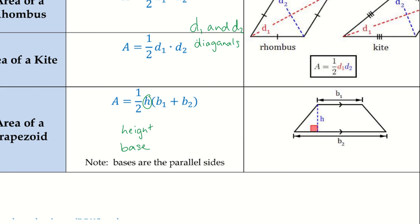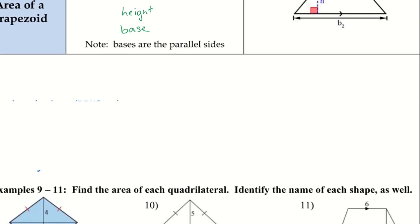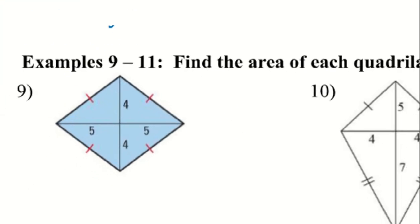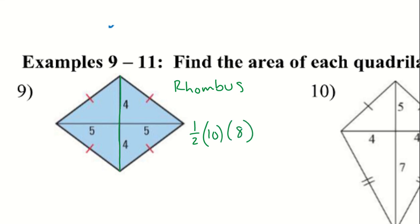For number 9, this shape is a rhombus — all four sides are congruent but there are no 90-degree angles. Using the formula, area = ½ × d₁ × d₂ = ½ × 10 × 8. Remember, we use the entire diagonals: 5+5 = 10 and 4+4 = 8. The area is 40.